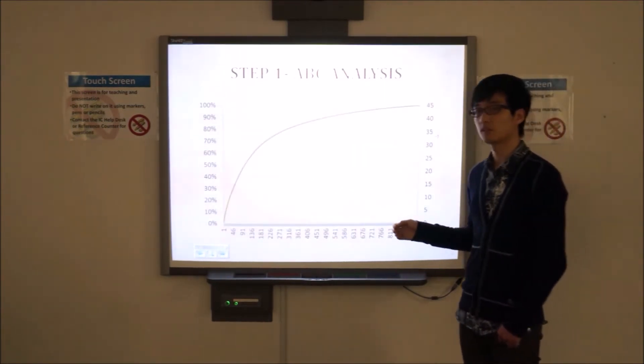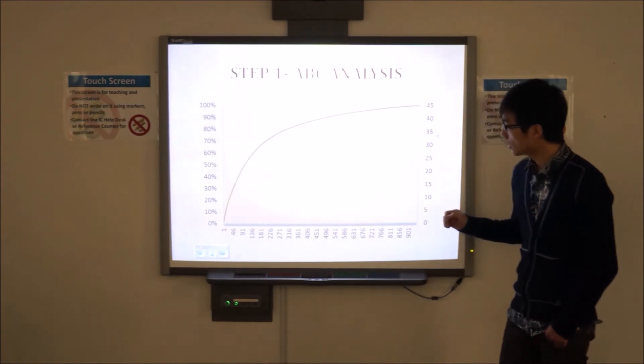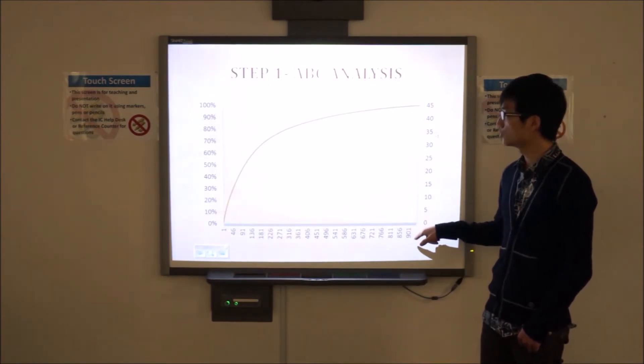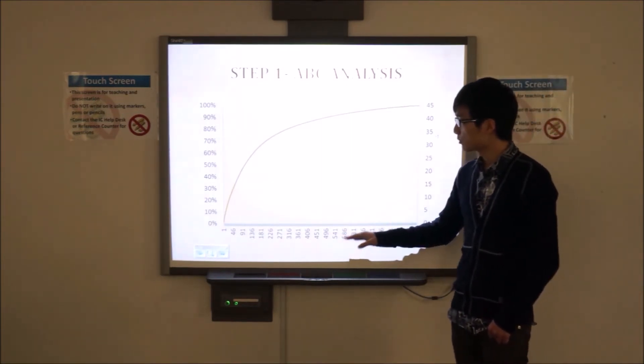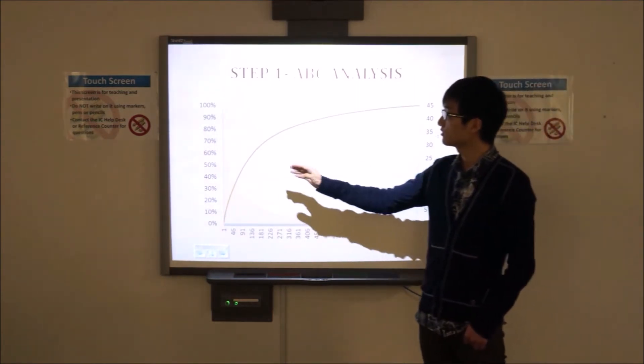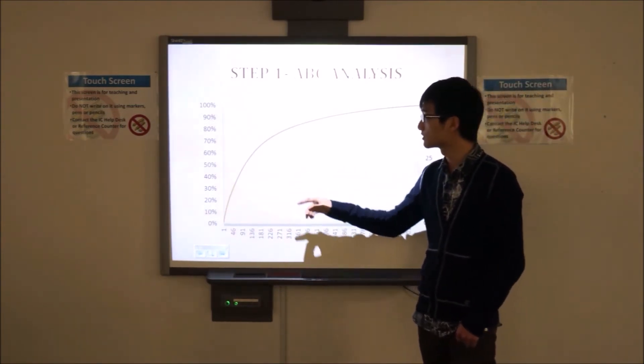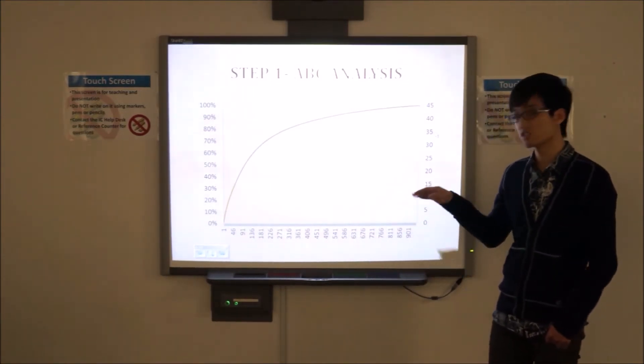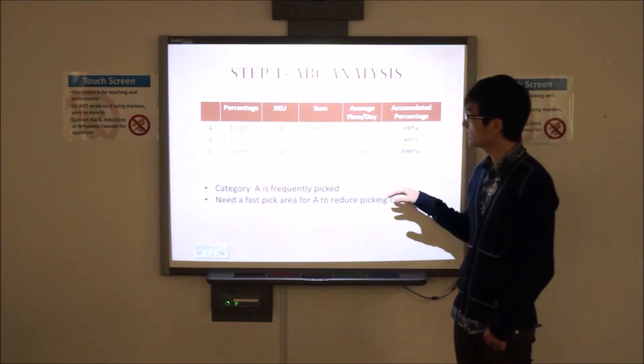Here, we have a combination of statistics, which covers 50 days record of a warehouse. There are totally 940 kinds of SKU in the warehouse. And the abscissa represents the kinds of stock keeping units. The ordinate on the left side represents the accumulated percentage of all the items. The ordinate on the right side presents the flow numbers of each item. After a series of calculations, we have this figure.